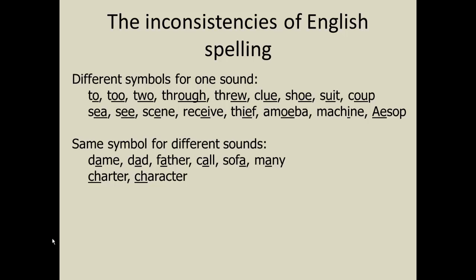It's easy to understand why someone learning English as a second language would have trouble with spelling. I remember one of my students asking me why the word 'character' begins with the same two letters as the word 'charter,' but they are pronounced completely differently. I'm afraid I didn't have a very satisfying answer — it involves the history of the English language. So we end up with this CH having two different sounds: charter, character. Same with OU: out, through, tough — different pronunciations.